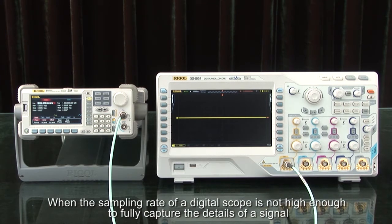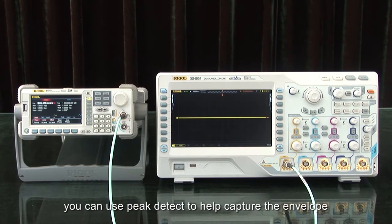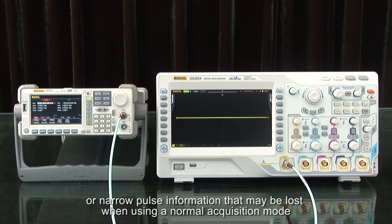When the sampling rate of a digital scope is not high enough to fully capture the details of a signal, you can use peak detect to help capture the envelope or narrow pulse information that may be lost when using normal acquisition modes.